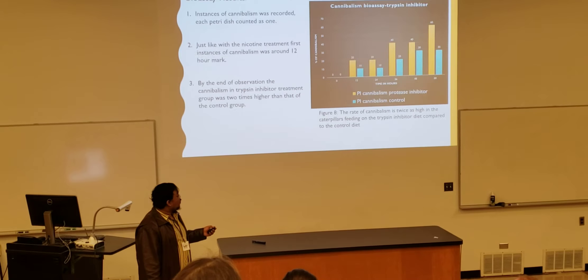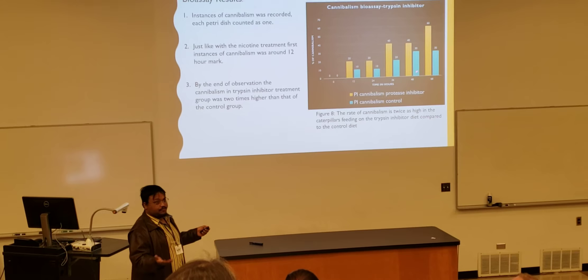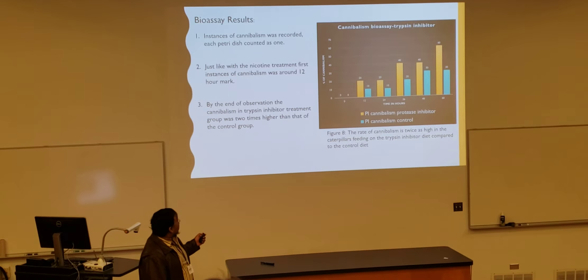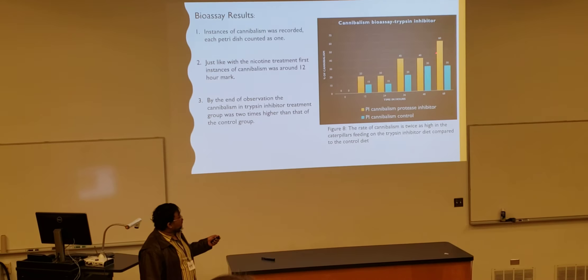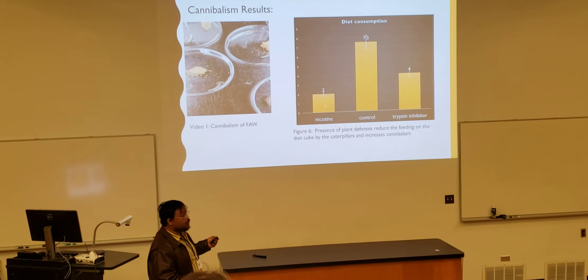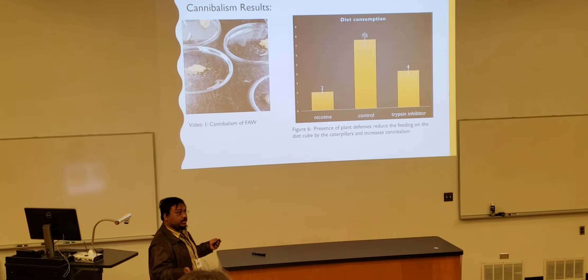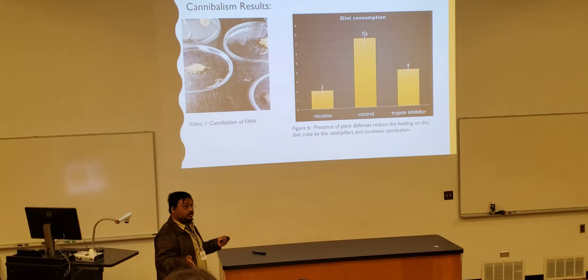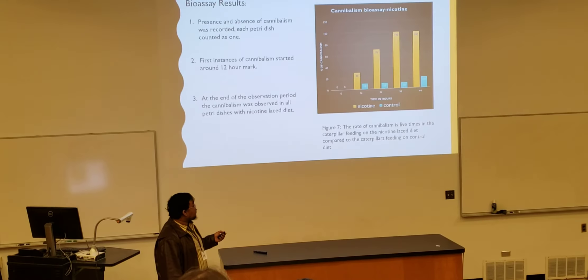Let's look at whether it matches with the trypsin inhibitor. As you can see, due to the increased observation period, there is another data point here. As we saw with the control and the nicotine group, this is also showing increased cannibalism — about two times — but not as much as the nicotine group. So to summarize: diet consumption is least with nicotine, cannibalism is most with nicotine; diet consumption is medium with trypsin inhibitor, cannibalism is medium with trypsin inhibitor; diet consumption is maximum at control, and cannibalism is lowest at control.